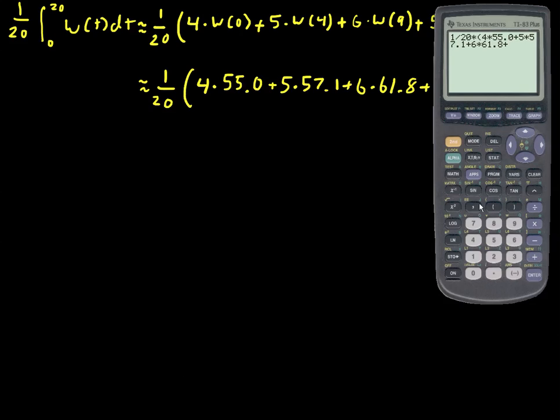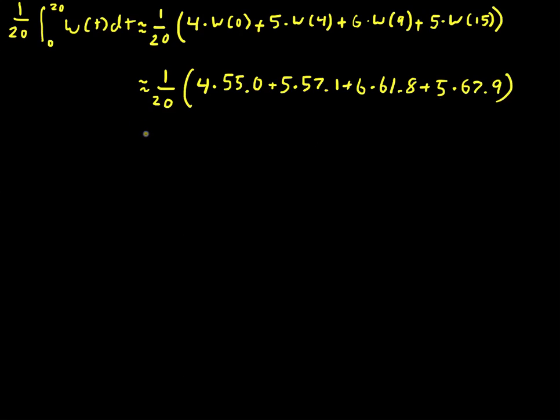5 multiplied by 67.9, and this gives me 60.79 as the value of this, so approximately 60.79 degrees Fahrenheit.